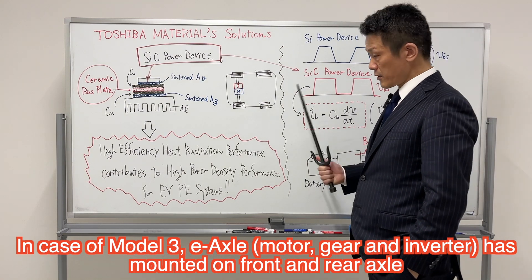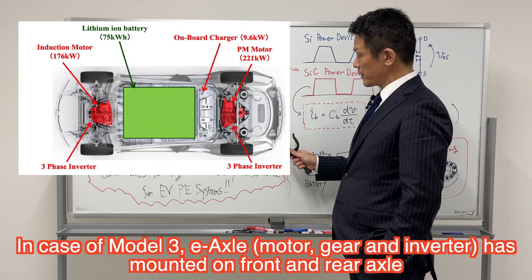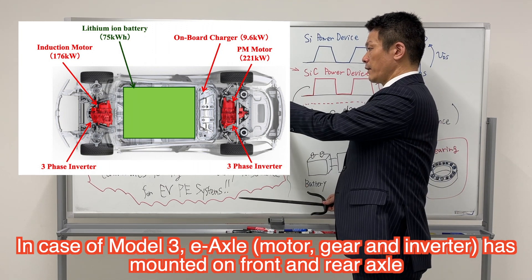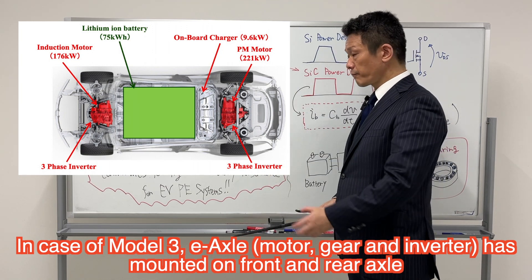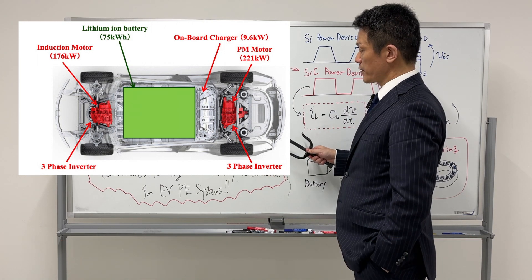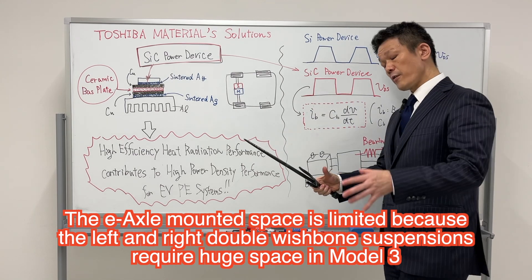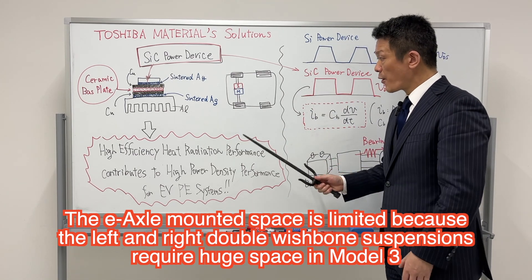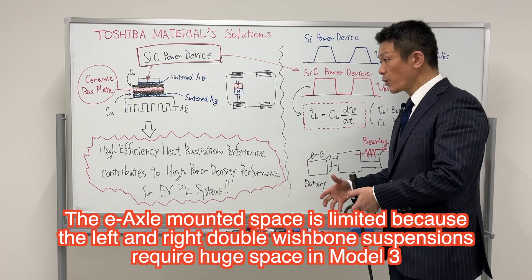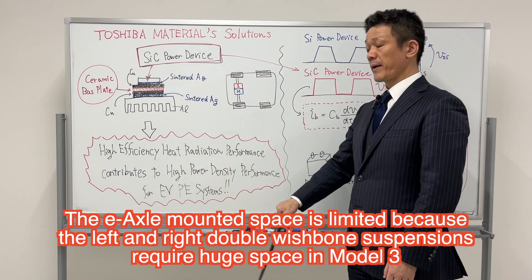In the Tesla Model 3, the inverter, motor, and differential gear form the e-axis, which has been applied on the drive shaft. So the space is limited, requiring high power density performance. That is why they applied the ceramic base plate.